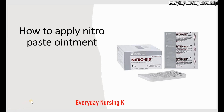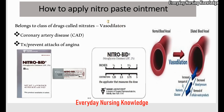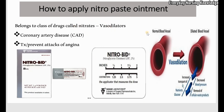Welcome to Everyday Nursing Knowledge Lectures. Today we will learn how to apply nitropaste ointment. Nitropaste ointment, also known as nitroglycerin or nitrobit, belongs to a group of drugs called nitrates, and they are vasodilators. That means it dilates the blood vessels and improves blood supply to the tissues.